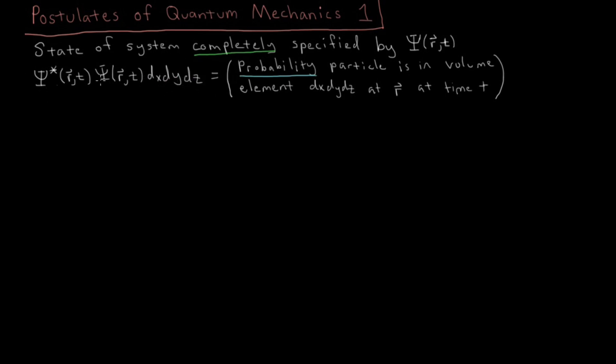that this product is equal to the probability that the given particle or particles for the system are in a volume element, dx, dy, dz, this small region of space, which is at position r and at time t.